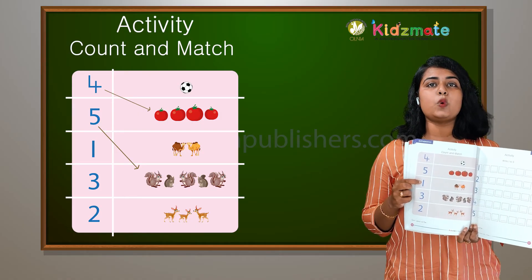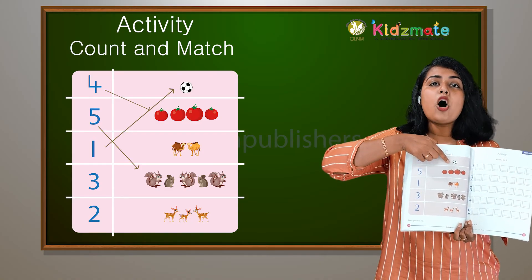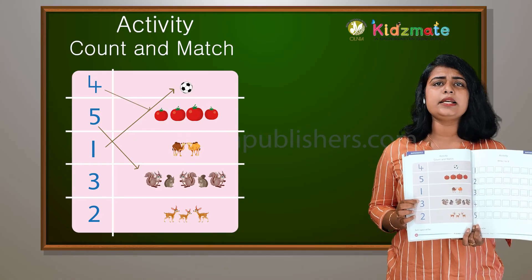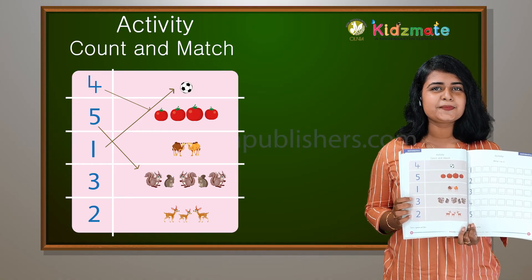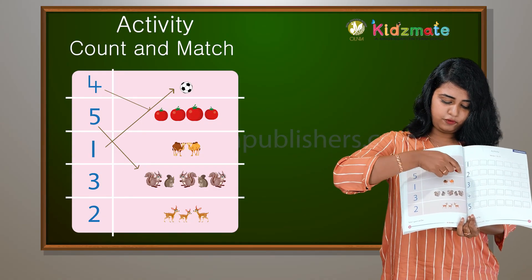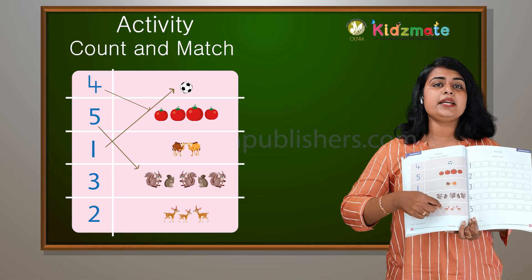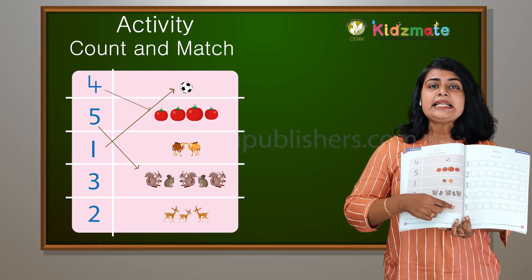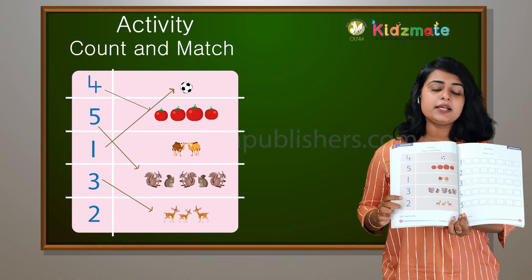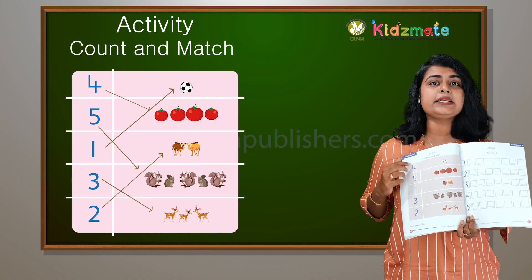This is 1. We have 1 ball here. What is this number? This is 1, 2, 3, 4. This is 1, 2. This is 1, 2, 3, 4, 5. How many? 3 — so you should match 3 with these deer. And the number 2 — you have 2 camels. 1, 2 — 2 camels. So you know how to count and match.